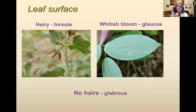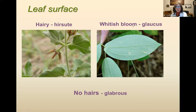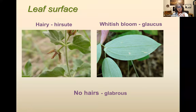When talking about leaf surfaces, a lot of the characteristics are going to be hairs, but there are a couple of other characteristics too. One is a whitish bloom called glaucous — this is the underside of a leaf that's just kind of a white color. Most of the time when you have that kind of bloom, you can take your thumb and rub it off. If there are no hairs, it's called glabrous — you have to watch out not to confuse glaucous and glabrous, as they're kind of similar terms.